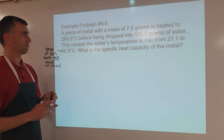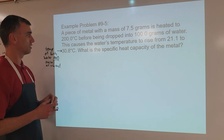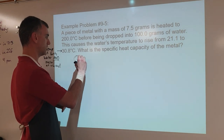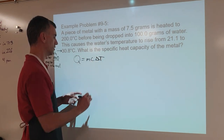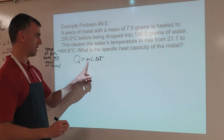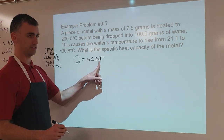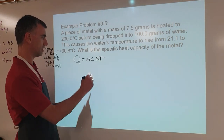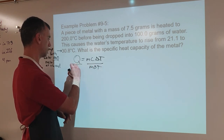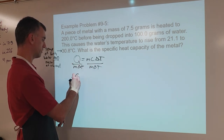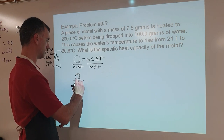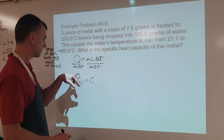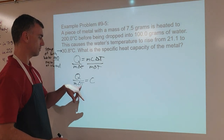So if we have mass, temperature, and specific heat capacity, we know we need the equation q equals mcΔt, where q is energy, m is mass, c is specific heat capacity, and Δt is change in temperature. So for the metal, if we want c, we divide both sides by mΔt to give q over mΔt equals c for the metal.